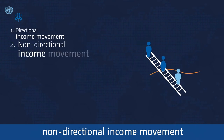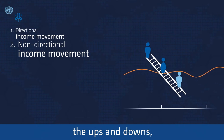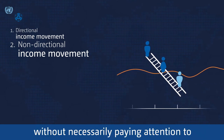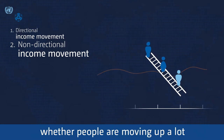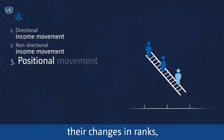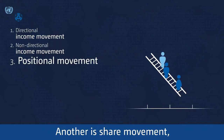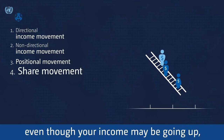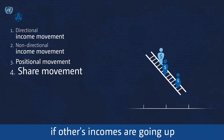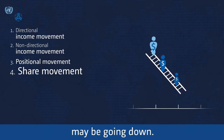Non-directional income movement is the magnitude of the changes — the ups and downs — without necessarily paying attention to whether people are moving up a lot or down a lot. The changes in ranks is positional movement. Another is share movement: even though your income may be going up, if others' incomes are going up faster than yours, then your share of the total may be going down.